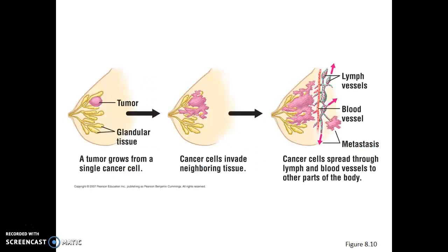Cancer cells are named based on the tissue in which they start, even if they end up traveling to other parts of the body. In this case, there are cancer cells that originated in breast tissue, so this is a breast cancer. As that cancer starts spreading through the tissue in which it was found, it can interfere with the functioning of those tissues. But again, the biggest risk is when those cancer cells start spreading through other tissues of the body, interfering with them as well.